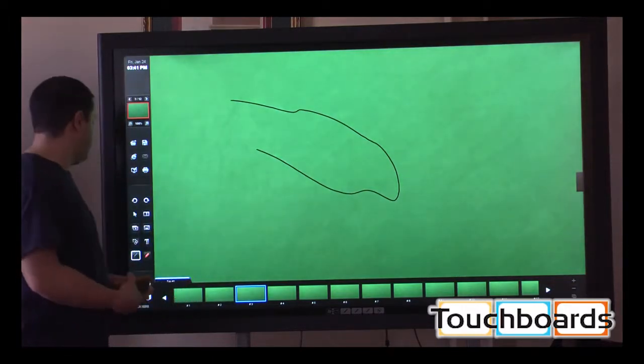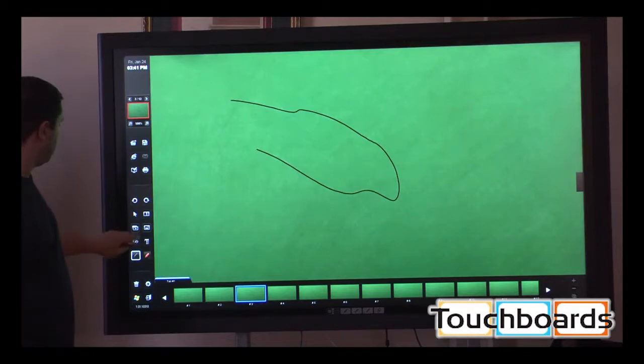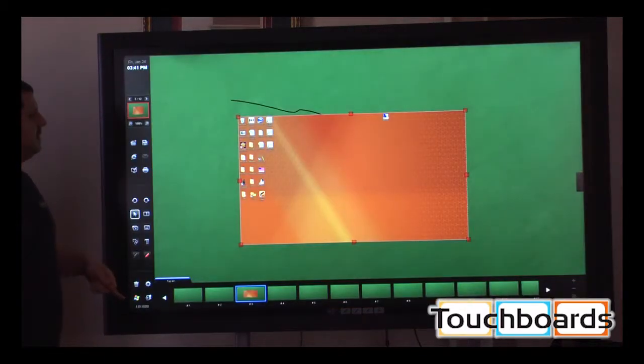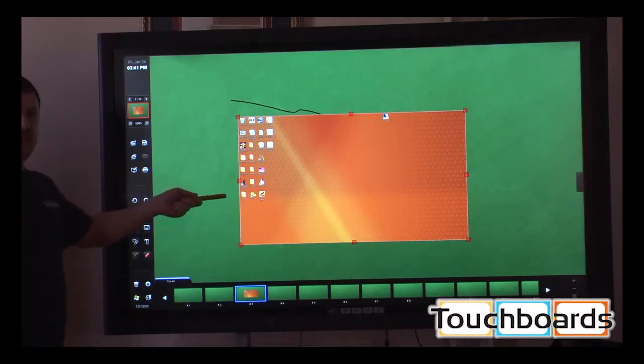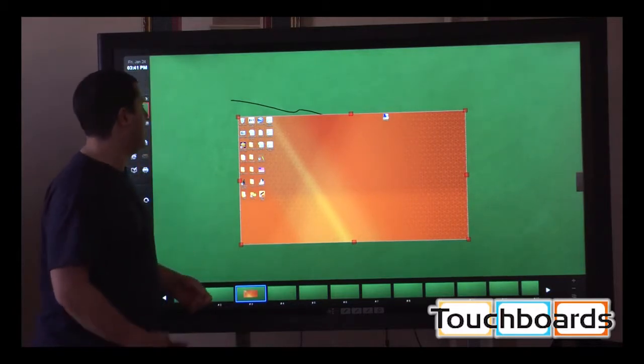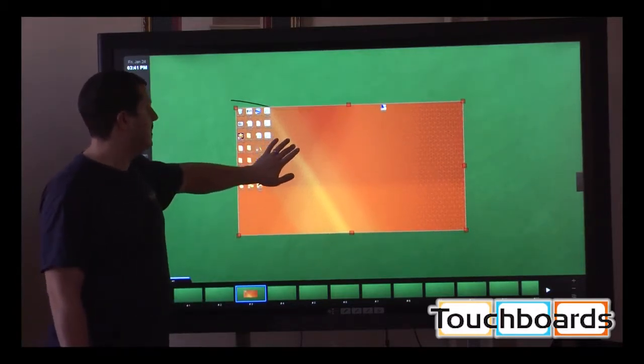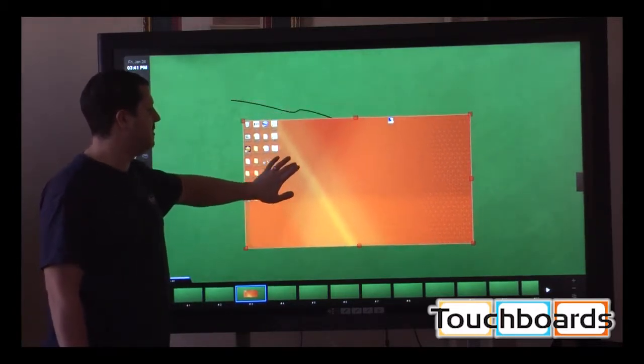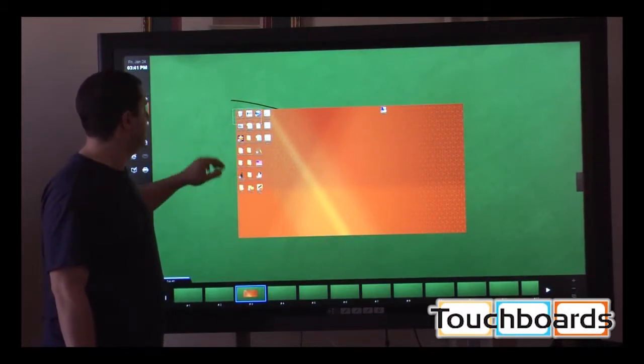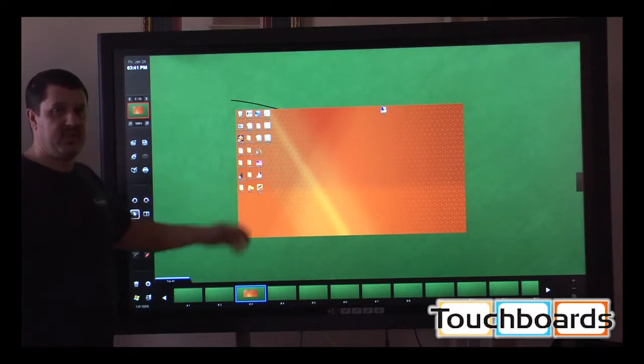In addition, you have the ability, just by clicking this little button over here, you can import an image. You can capture windows. As you can see, it just brought whatever was on my desktop, which just happened to be nothing, right into here. And now, this is an object inside the Hyundai software that I can move around, shrink, make bigger, do whatever I want to do.